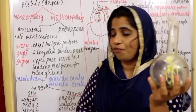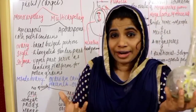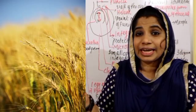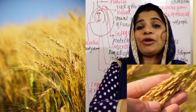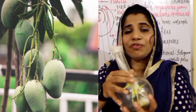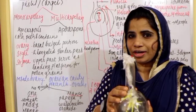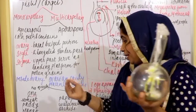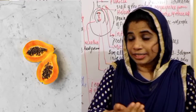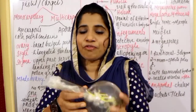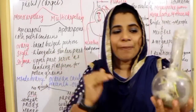The number of ovules in the ovary may be one — for example, wheat, paddy, and mango each have one ovule. Or there may be many ovules — for example, papaya, watermelon, and orange have many ovules present.